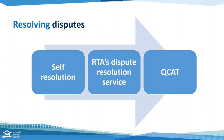With dispute resolution, the RTA sees this as a three-step process. The first step is self-resolution. The second step, if not resolved, parties can access the RTA's free dispute resolution service for assistance. And then if it remains unresolved, you can proceed to QCAT.